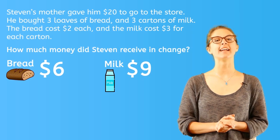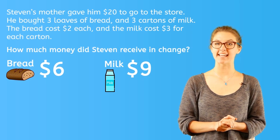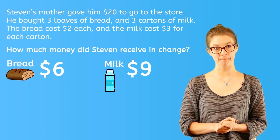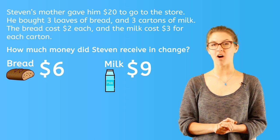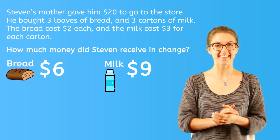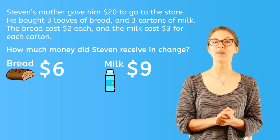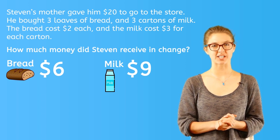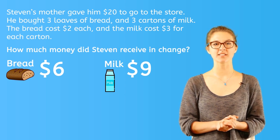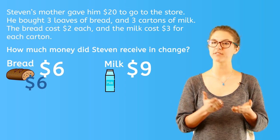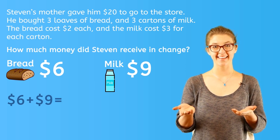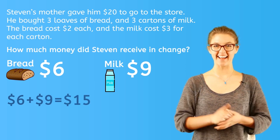In order to find out how much change he received, we need to know how much his groceries cost altogether. And what does that word 'altogether' tell us to do? Add! That's right! When Stephen went to the cash register to pay for his items, they totaled $15, because $6 for bread plus $9 for milk equals $15.